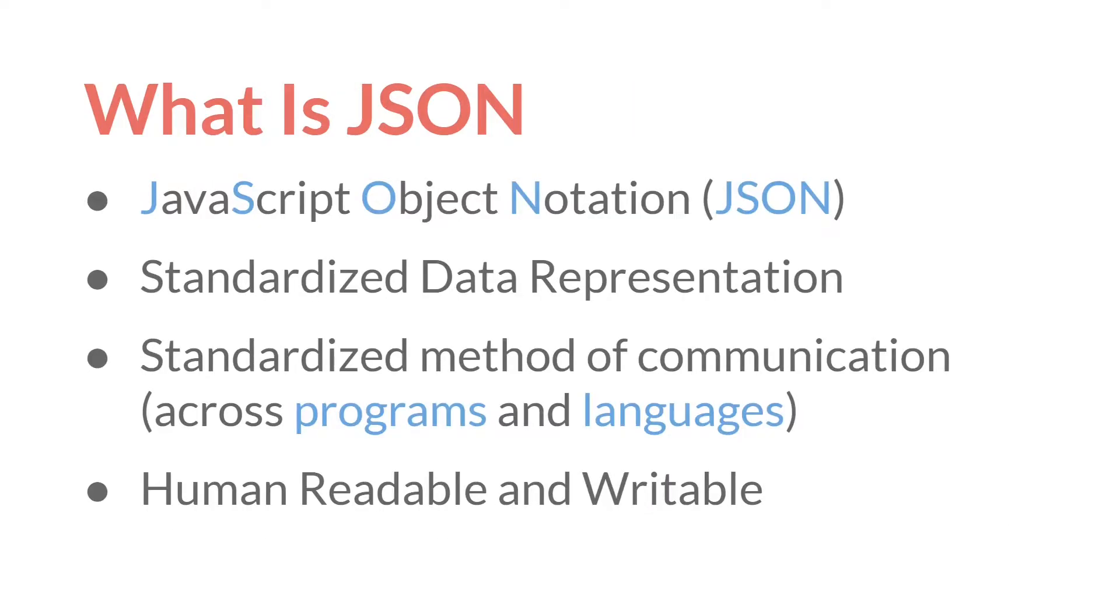So what is JSON? JSON stands for JavaScript Object Notation, and it is a standardized means of representing data. Because it's standardized, it means it works across programs and languages. So although it originated with JavaScript, it is actually not JavaScript, and many programming languages actually have means of integrating with JSON files.